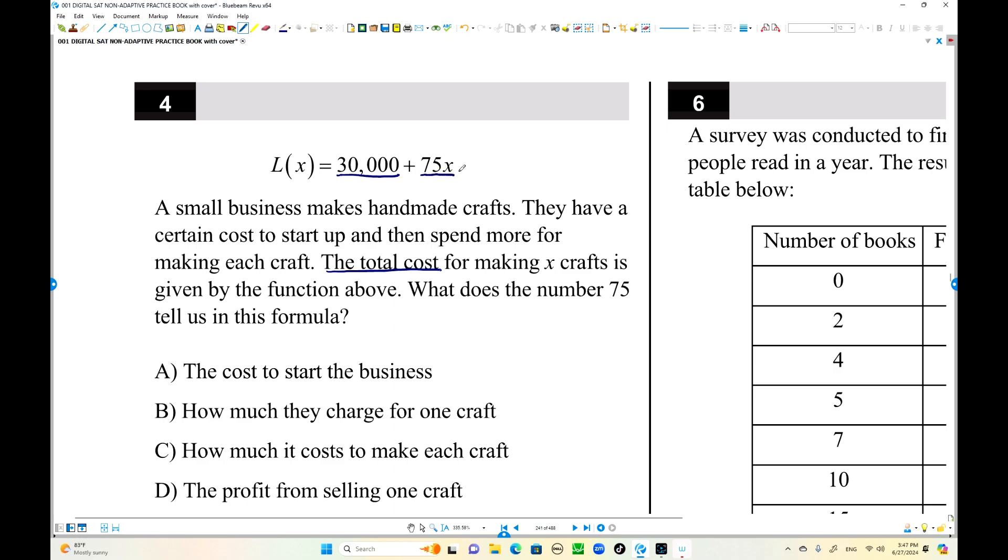Addition to that, 75 times x. x is number of craft. So what is this one? That is total cost. But this cost is actually cost to make one craft, which is the slope. 75 is the slope when you make a graph. We start from 30,000. Every increase by one craft, they increase 75. This is the cost to make each craft. Choice C is the answer.